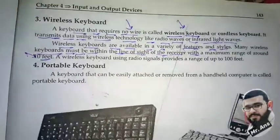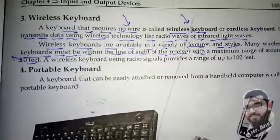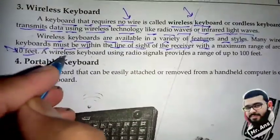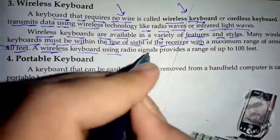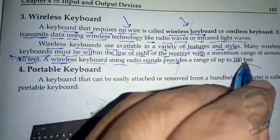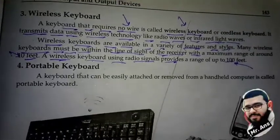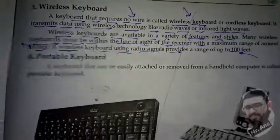A wireless keyboard using radio signals provides a range of up to 100 feet. Radio waves provide greater range - you can use it at 100 feet and the input will still be entered.